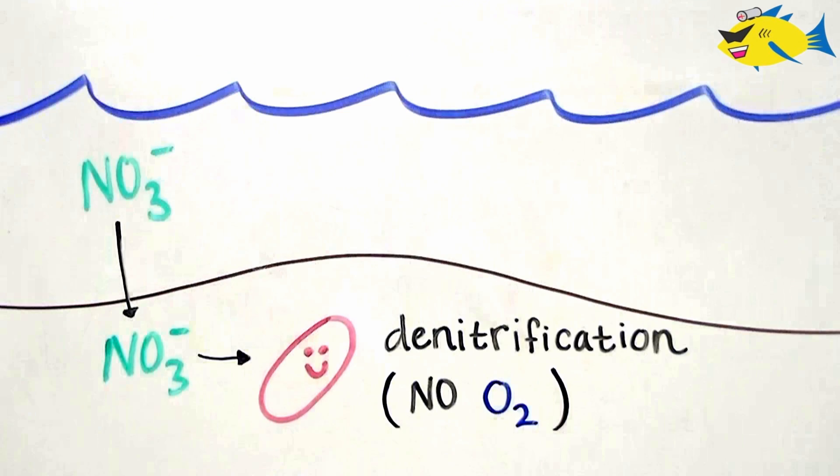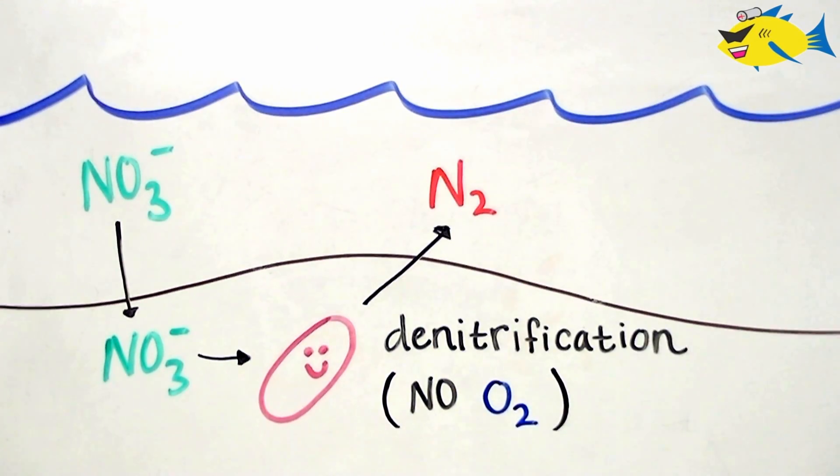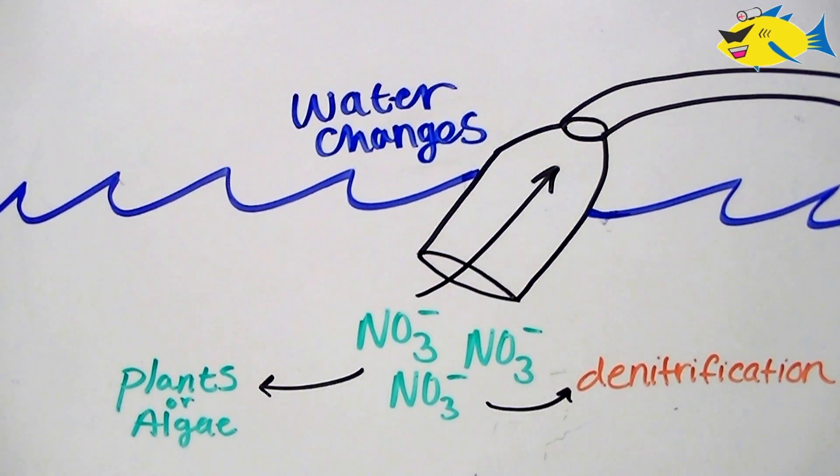In anaerobic zones, areas in the aquarium with no measurable oxygen, such as the substrate, a process called denitrification can take place. This is performed by bacteria that are responsible for the full reduction of nitrate to nitrogen gas, which can then leave the aquarium. Nitrate concentrations can also be reduced by doing routine water changes.